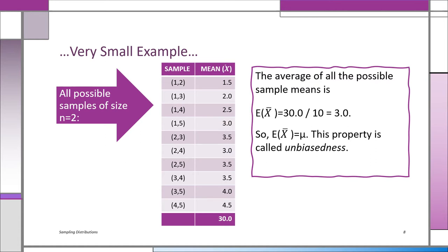Now we see what unbiased means. Try to imagine the same thing when you're taking samples of size 1,000 out of a population of 330 million — the population of the United States. If you're measuring income and average out all the x-bars, you'll be getting mu. It's called unbiasedness: there's no bias. The expected value of x-bar is always going to be mu.